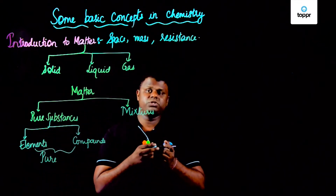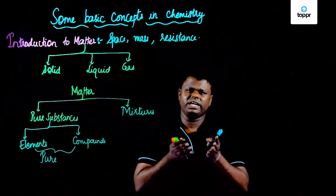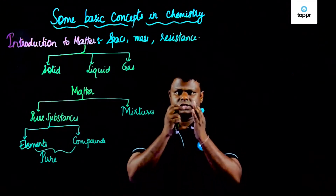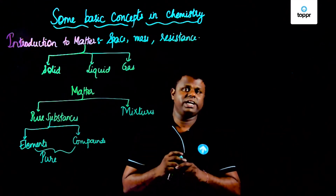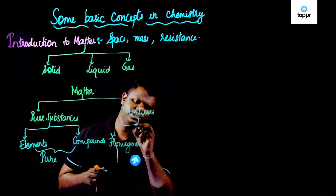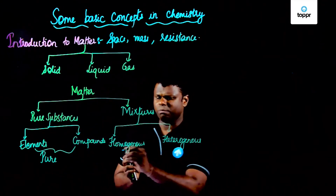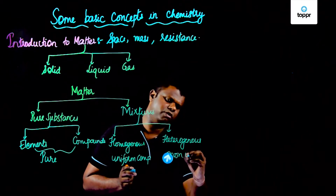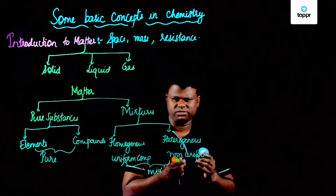When you talk about a mixture, it is something that has been mixed. For example, take water and put some sugar in it — it becomes a sugar solution in which sugar completely mixes with the water. This is called a homogeneous mixture, where the composition is uniform throughout. When the composition is non-uniform throughout, it is basically a heterogeneous mixture. So mixtures are classified into two types: homogeneous and heterogeneous. In mixtures, the substances mix — we never say they react.